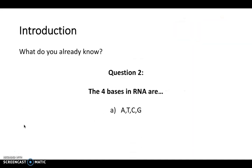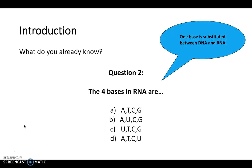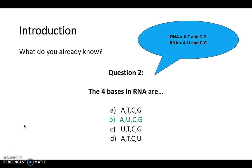Question 2. The four bases in RNA are what? Remember, one base is substituted between DNA and RNA. So the answer here is A, U, C, and G.